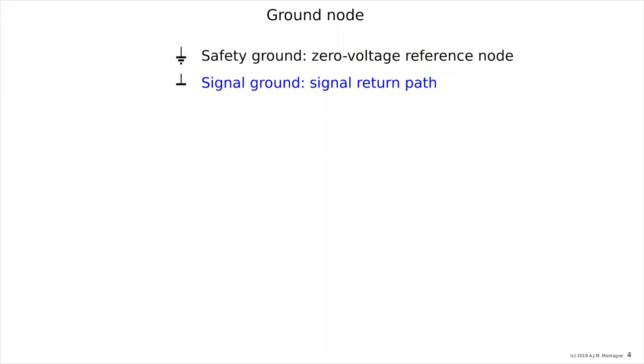The signal ground, which is a return path for the signal, a common connection between all ports. It may be shared by amplifier ports, yes or no, and it may be shared also by the power supply, which is one of the amplifier ports.